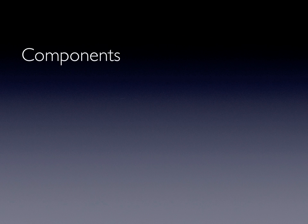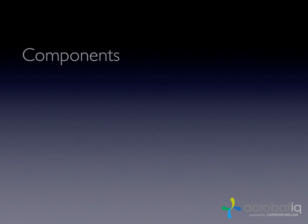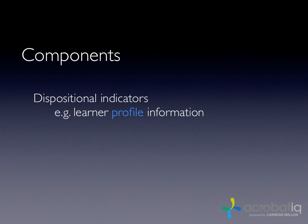Let's now break learning analytics down to its basic components. Malcolm Brown's work here is particularly useful. He divides the types of information we're collecting into two broad categories. First, dispositional indicators — essentially a learner profile. Information about the learner can be pulled from registration records, the learner's educational history, current GPA, demographic information such as age and sex, and self-evaluations done by the learner. The hope is that this information, beyond what they do in a particular course, will help us serve and support that student better.